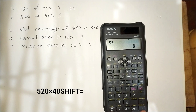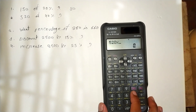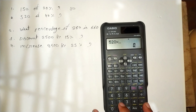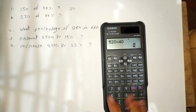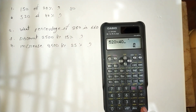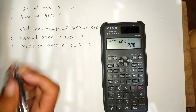Press 520, multiply by 40, then press Shift and Equals. We get 208.